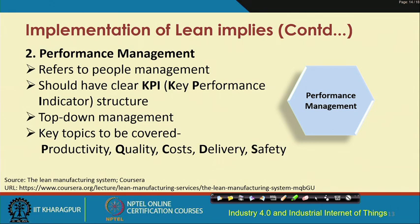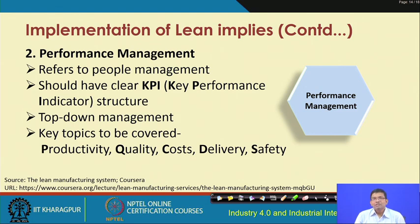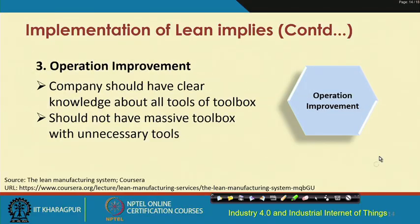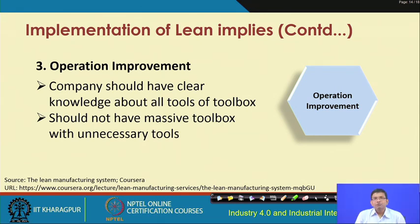The second dimension of lean implementation is performance management — involving people management and use of KPIs (Key Performance Indicators) to assess performance in the production process. Top-down management is considered, and KPIs measure productivity, quality of goods, costs, cost of delivery, production time, safety, and so on. These are the performance attributes to be considered in the lean production system.